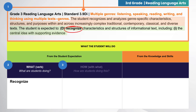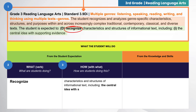Third, determine the how by asking: how are students doing this? Consider how students will recognize, and in doing so, with what concept and or skill will students engage to demonstrate their learning. For this standard, the student expectation indicates that students will recognize characteristics and structures of informational text, including the central idea with supporting evidence.